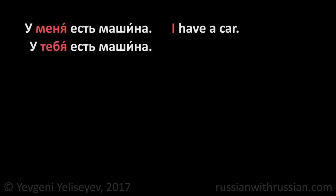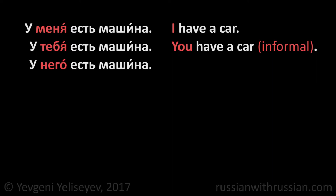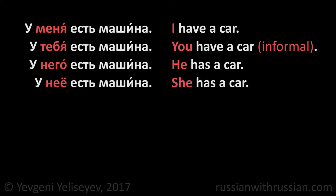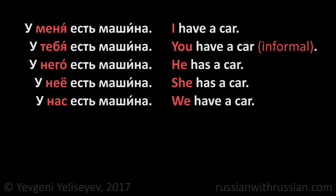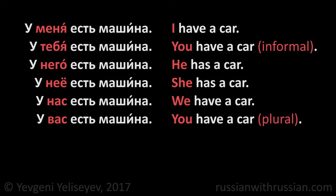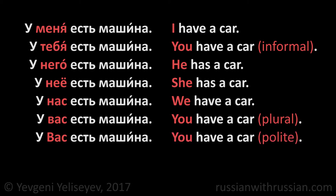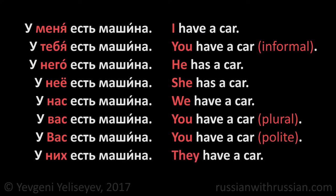Let's see the full paradigm. У меня есть машина — I have a car. У тебя есть машина — you have a car, if you address the person as ты. У него есть машина — he has a car. У неё есть машина — she has a car. У нас есть машина — we have a car. У вас есть машина — you have a car, addressing several people. У вас есть машина — you have a car, polite form. У них есть машина — they have a car.